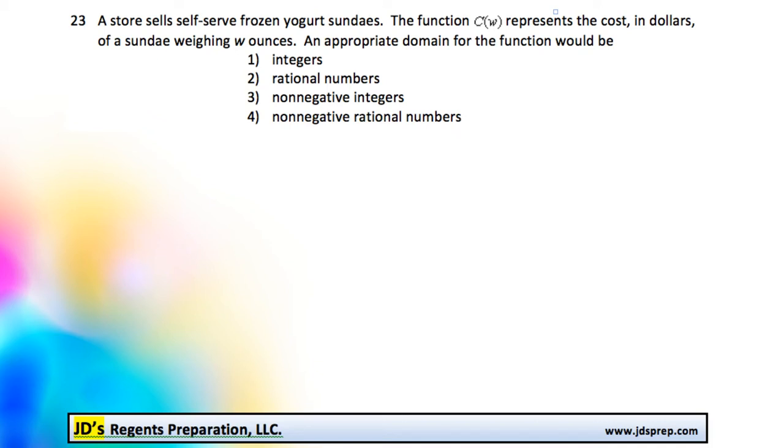I think a good starting point for this is to try to visualize what this graph could look like. The function C of W, that's our dependent variable, on the left-hand side. And the weight is our independent variable on the x-axis. This is because the cost of the sundaes are dependent on how much they weigh.